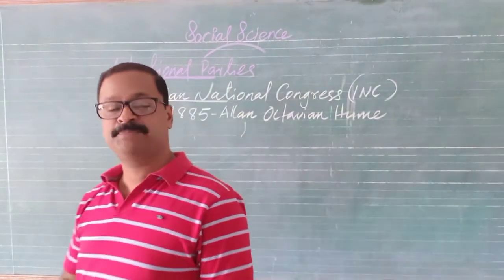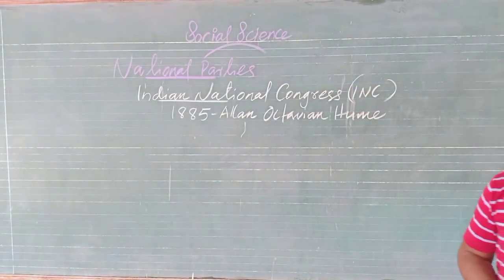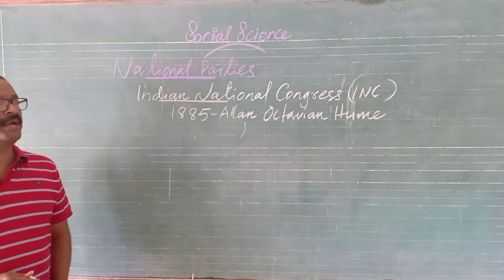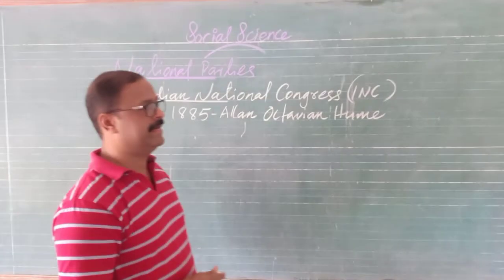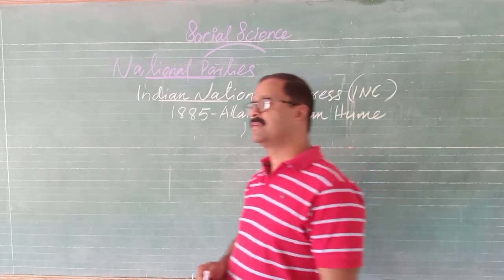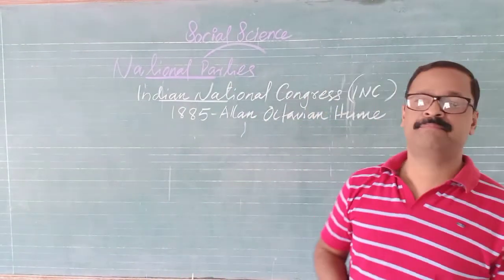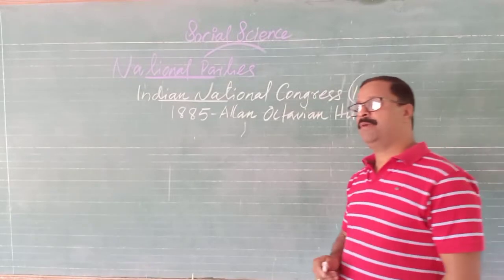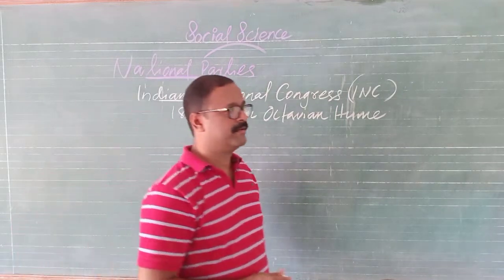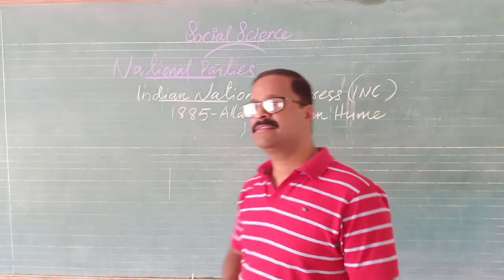The Indian National Congress has experienced many splits. It played a very dominant role in Indian politics at the national and state level for several decades after India's independence. Under the leadership of Jawaharlal Nehru, the party built a modern secular democratic republic in India. The Indian National Congress was the ruling party at the centre till 1977.